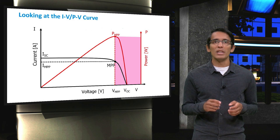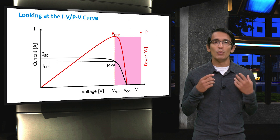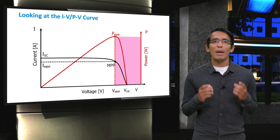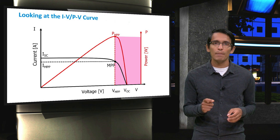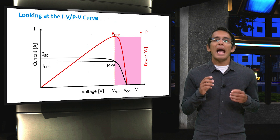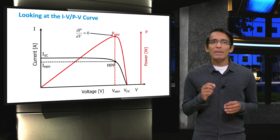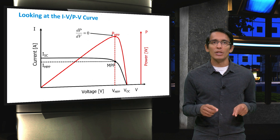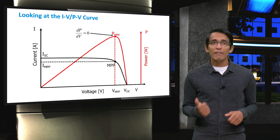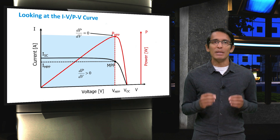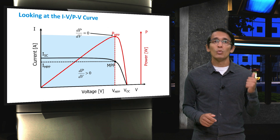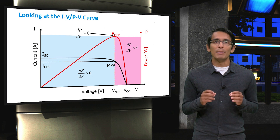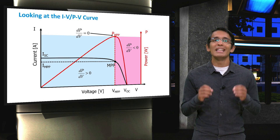One thing that is unique about these three regions is the derivative of the power with respect to the voltage, or dP/dV. At the maximum power point, dP/dV is zero. In the blue region, to the left of the maximum power point, dP/dV is positive. Finally, to the right of the maximum power point, dP/dV is negative.